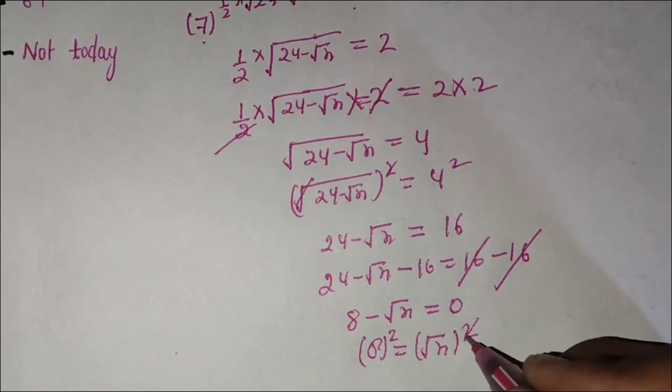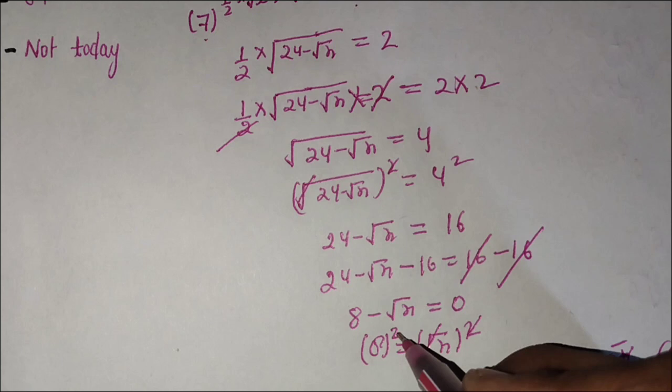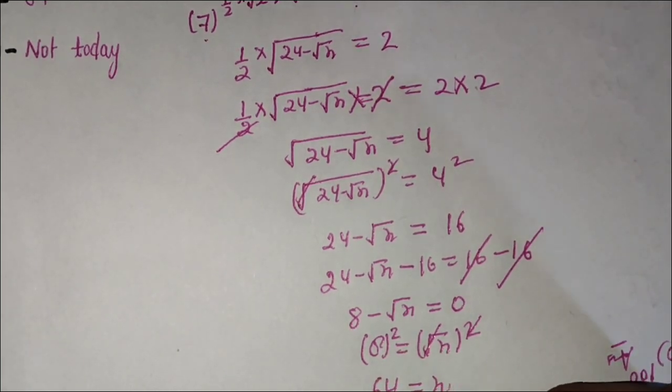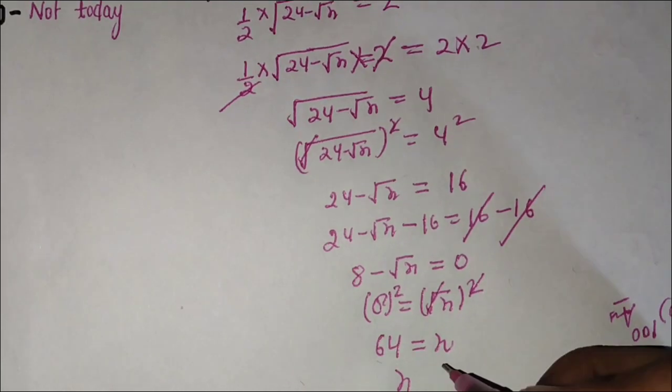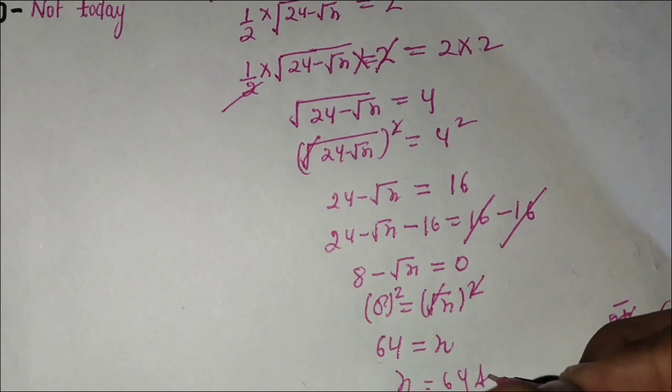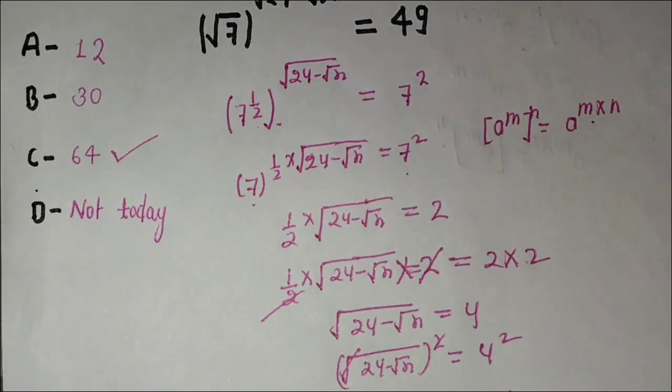8 squared equals 64, so x equals 64. This is the answer. Option C is correct. Bye!